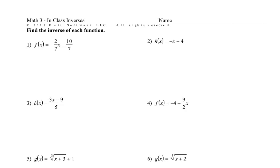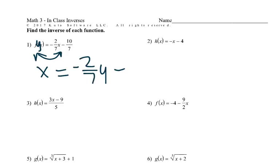Here we go with our inverses — just practicing, so let's get started. Remember the idea is that we're changing the input and the output, the domain and the range. So f of x, which is also like y, gets swapped, so we end up with x equals negative 2 over 7 y minus 10 over 7.